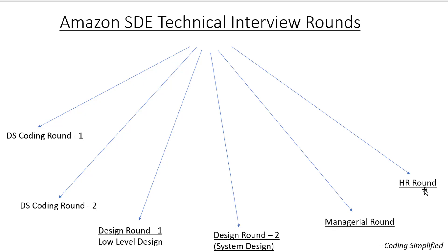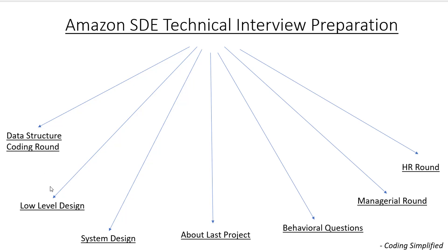Then comes the HR round, which I would say is mostly a formality. If you've reached the HR round, there's a 99% chance you're selected. The decision is made after all rounds are completed — the panel discusses the candidate and informs HR. To summarize: two coding rounds, two design rounds (low-level and system design), one manager round covering behavioral questions and your last project.